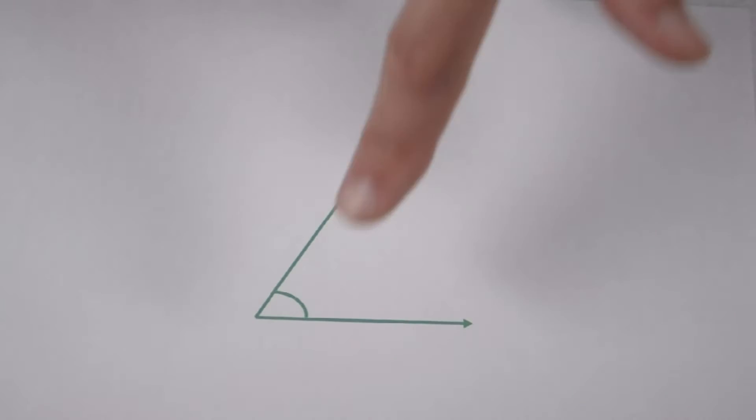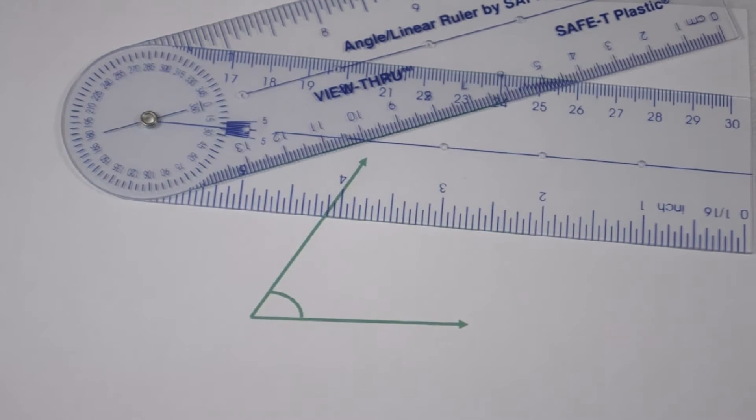From looking at this angle, we can see that it's an acute angle. So it's going to be less than 90 degrees. To find out exactly what it's worth, again, we can measure it with our angle ruler.